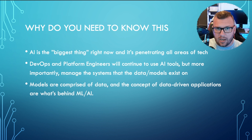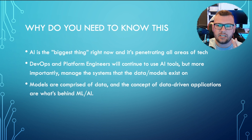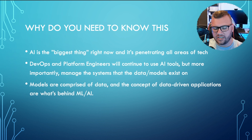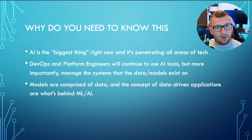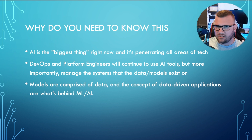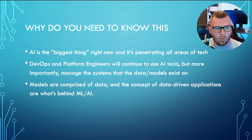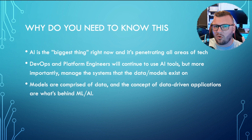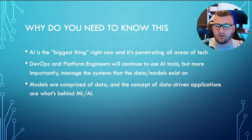AI is the biggest thing right now. It's penetrating all areas of tech — whether we're writing code, troubleshooting, looking at logs, or checking security vulnerabilities. As a platform engineer, we will continue to use AI tools. But more importantly, there's going to be data sitting on the systems we're managing, and we need to know how this data works. We sometimes think of data as just something persistent sitting somewhere, but data is much more complex. From a computer science perspective, we think about data from graph theory and graph algorithms.